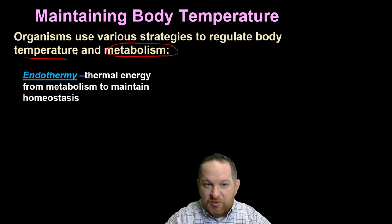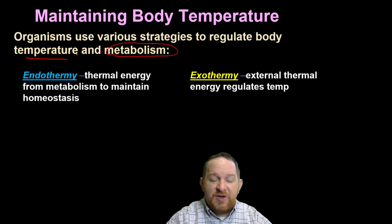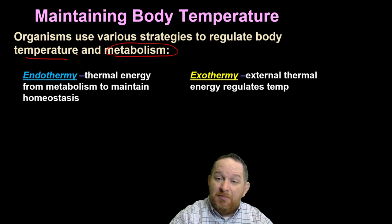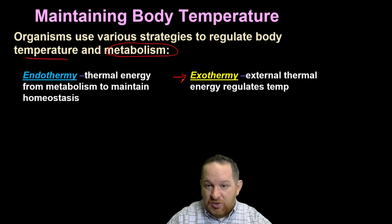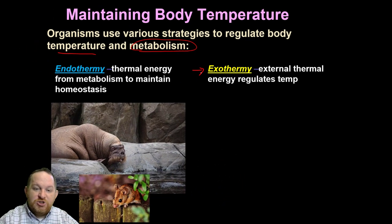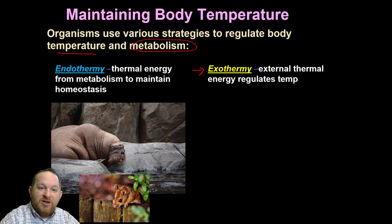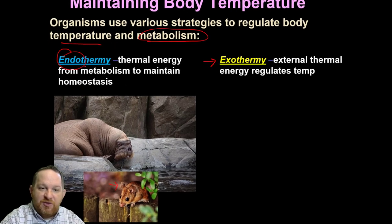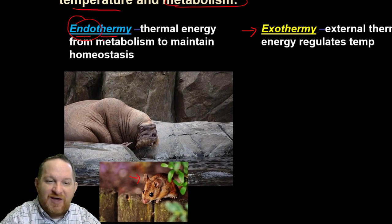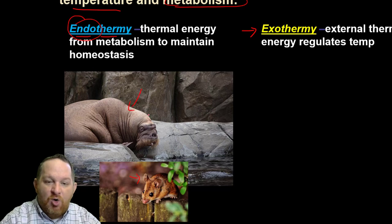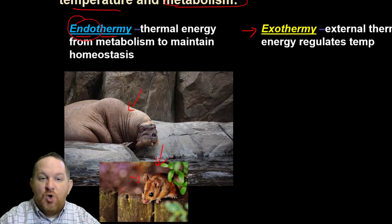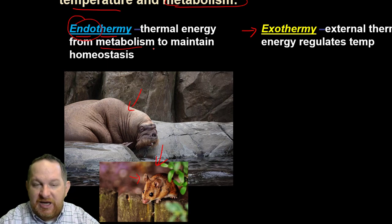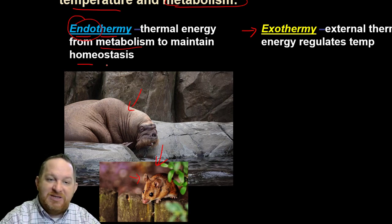For endothermic animals like us, we use energy to maintain homeostasis. If you think about a walrus or a little mouse, we're endotherms. If you look at the word, therm means temperature or energy, endo means inside. So we maintain our own temperature internally by breaking things down, getting heat from our food source. That helps us maintain homeostasis.